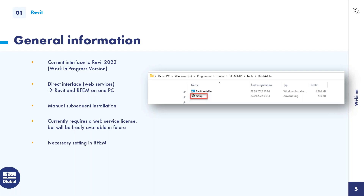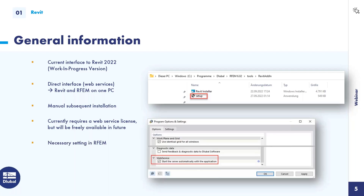One last piece of information before you try to use the interface: please have a look at the program options in RFM 6. The last option is to start the server automatically with the application — this option basically activates the web services, which you need to have active for the data transfer.